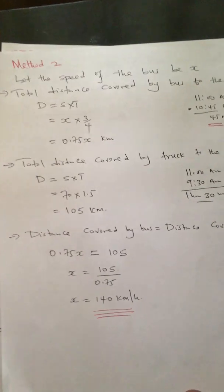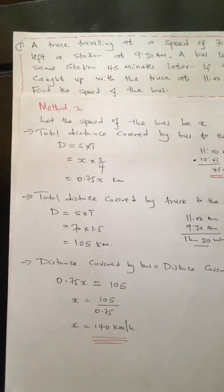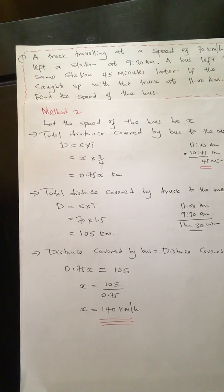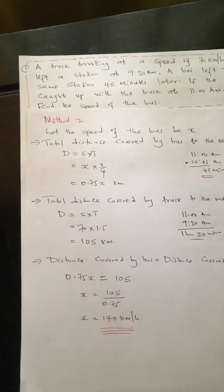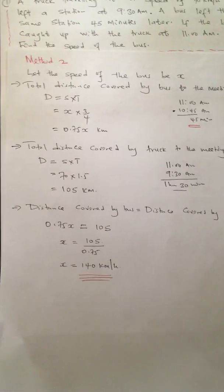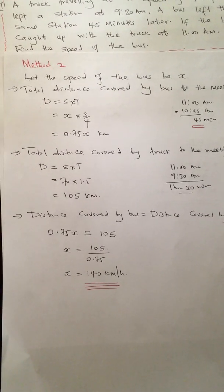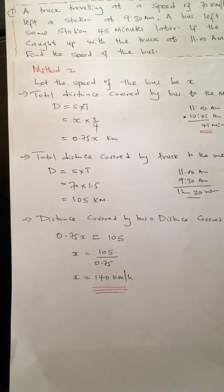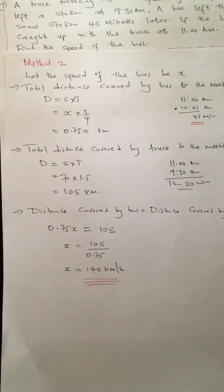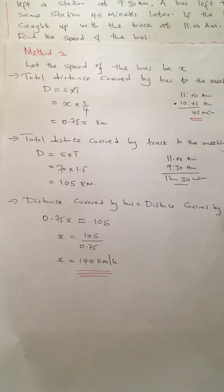The second method for the same question is based on comparing a common thing: from the station to the point where the two bodies met, both bodies cover the same distance. So I calculate the distance covered by the truck from the start to the meeting point, and also the distance the bus covered to that same point.